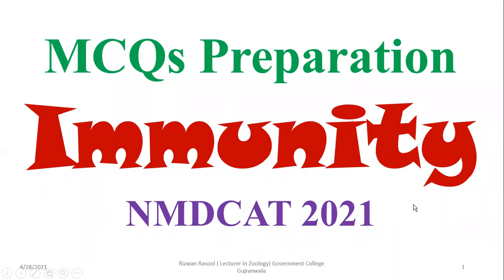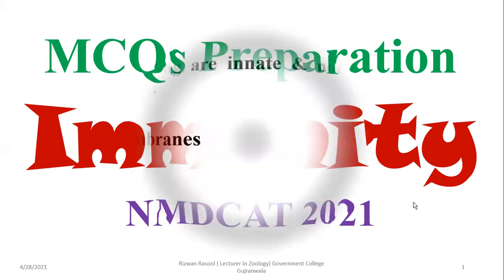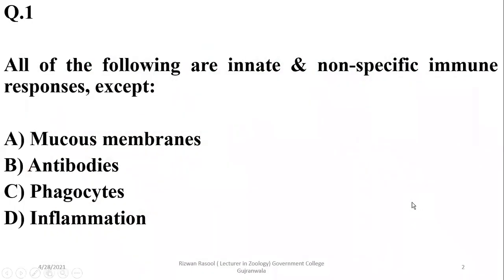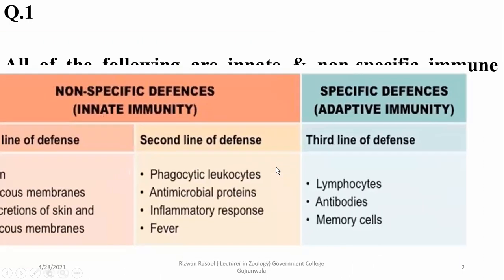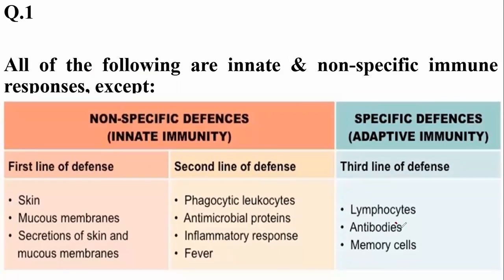Bismillahirrahmanirrahim. Immunity is the topic for today's MCQs discussion. Question number one: all of the following are innate and non-specific immune responses except antibodies. The first and second lines of defense are known as innate and non-specific immune responses, but antibodies are in the third line of defense — they are not regarded as innate or non-specific because they are acquired and specific immune responses.